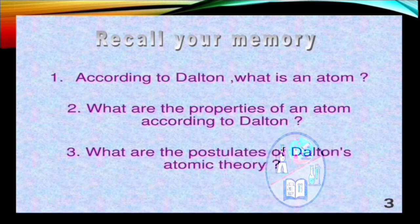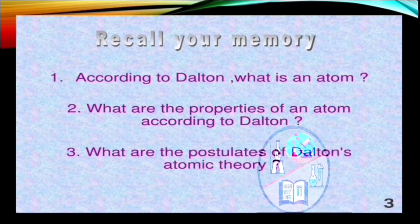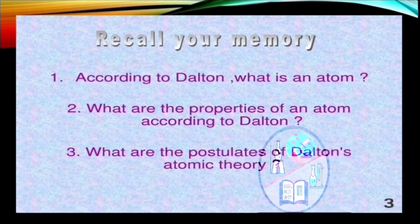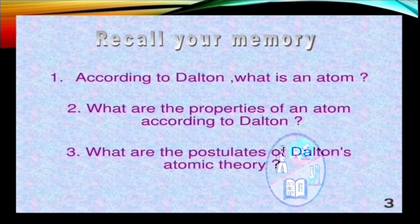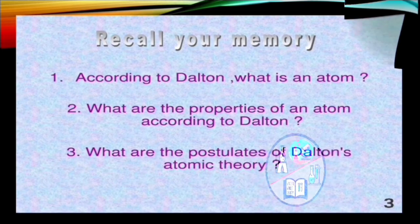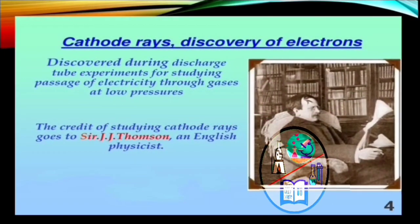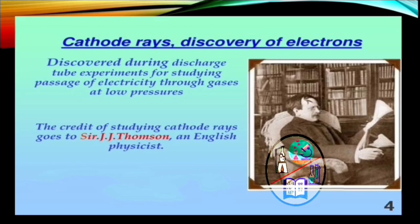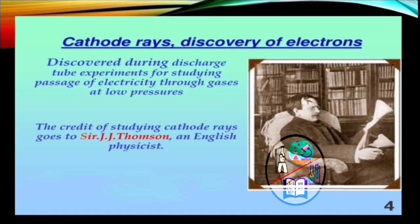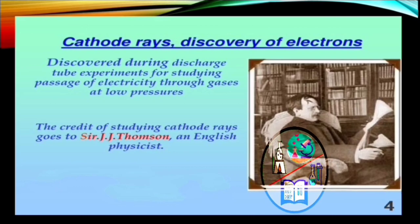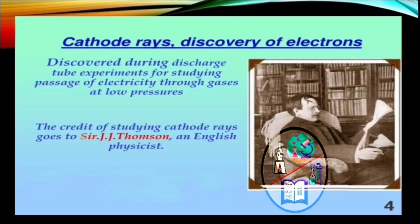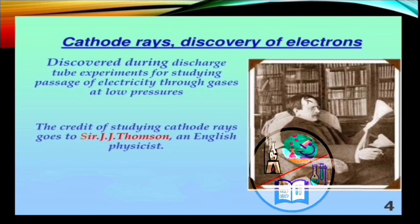But as the modern day scientists didn't believe the fact that atoms are indivisible, so they tried by their experiments to find out what actually the atom is made up of. And cathode rays were discovered during the discharge tube experiments which were done for studying passage of electricity through gases at low pressure by William Crookes. The credit of studying cathode rays goes to Sir JJ Thompson, an English physicist.